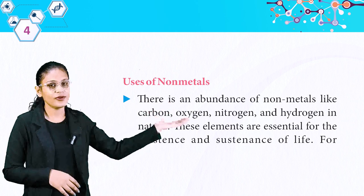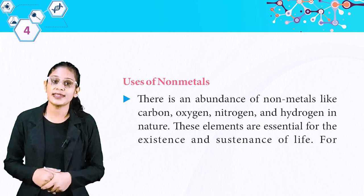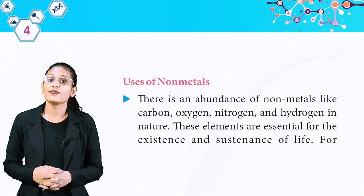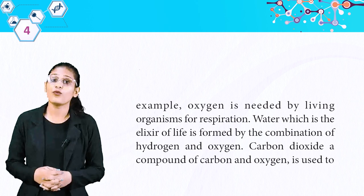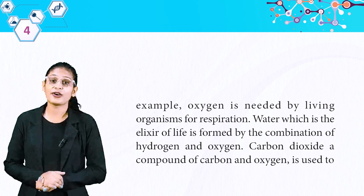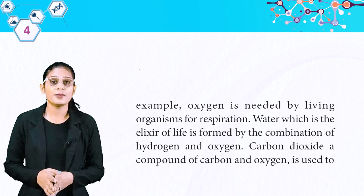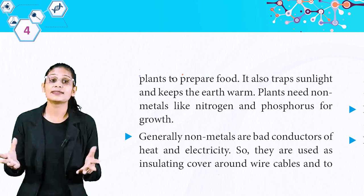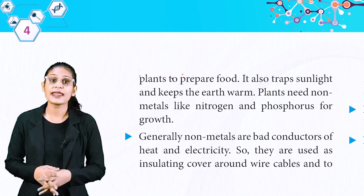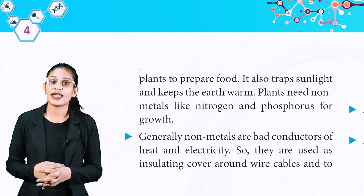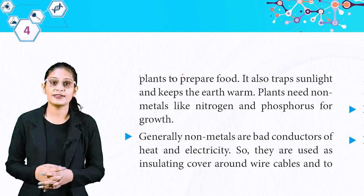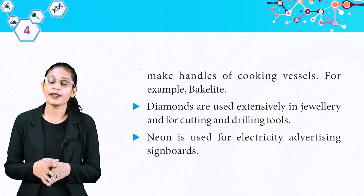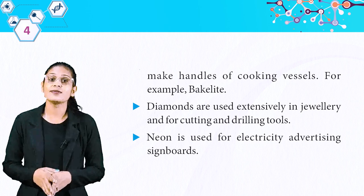Uses of non-metals: there is an abundance of non-metals like carbon, oxygen, nitrogen and hydrogen in nature. These elements are essential for the existence and sustenance of life. Oxygen is needed by living organisms for respiration. Water, the elixir of life, is formed by the combination of hydrogen and oxygen. Carbon dioxide, a compound of carbon and oxygen, is used by plants to prepare food and also traps sunlight to keep the earth warm. Plants need non-metals like nitrogen and phosphorus for growth. Non-metals are generally bad conductors of heat and electricity, so they are used as insulating cover around wire cables and to make handles of cooking vessels, for example bakelite. Diamonds are used in jewellery and for cutting and drilling tools. Neon is used for electric advertising signboards.